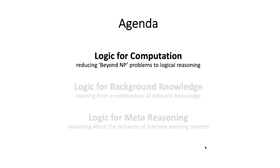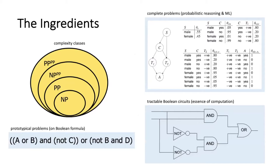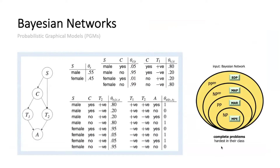Let's get started with the first component, which is logic for computation. We have these particular components: we'll start by introducing problems that are complete for the relevant complexity classes, then look at problems that are prototypical for those classes, discuss the reductions, and finally discuss tractable Boolean circuits. I'll use an illustrative example for the queries I'm going to look at next.